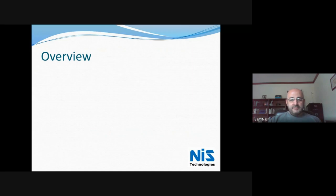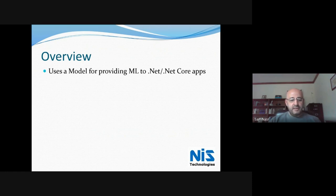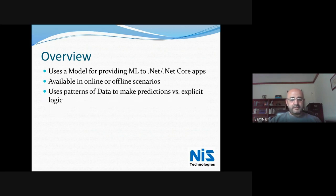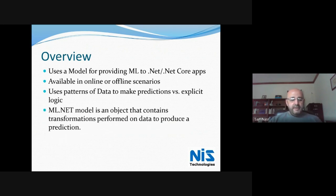A little bit of overview about tonight's topic: we're going to talk about machine learning and how we're going to add that to .NET Core apps. We're going to use a model to provide the machine learning and then incorporate that within a given application. Once we do that, the model will be available either in an online or offline scenario. We train that model using a pattern of data rather than using explicit logic like a specific formula. With ML.NET, a model is an object that contains the transformations performed on the data to produce a prediction.